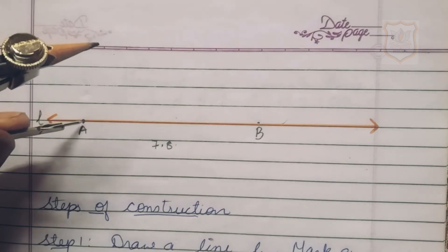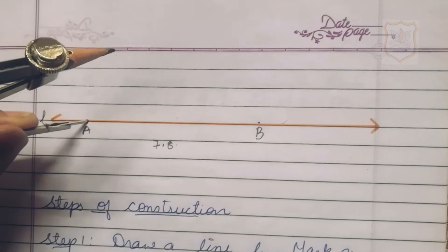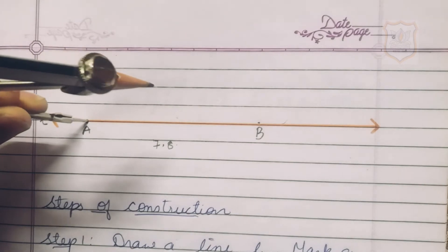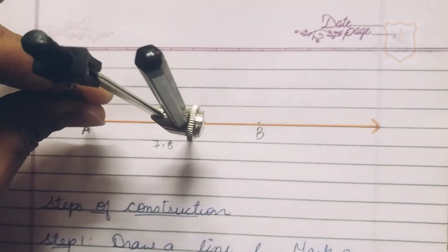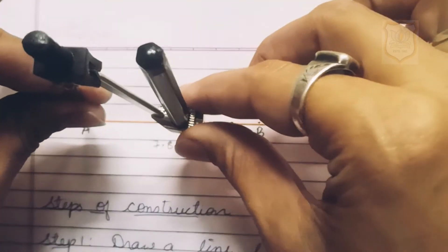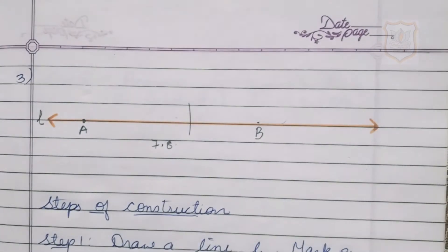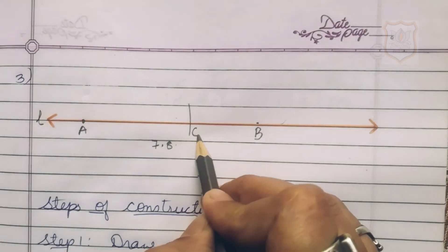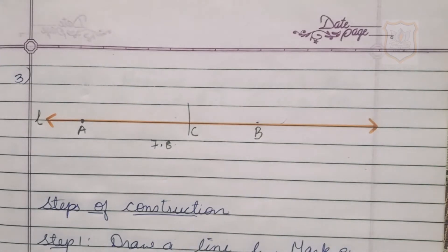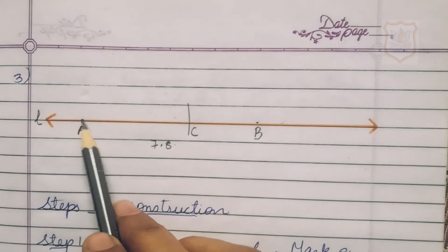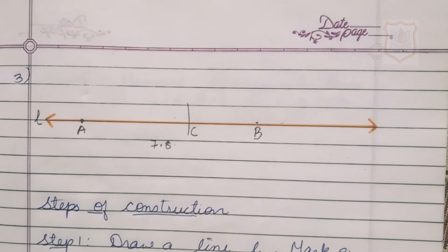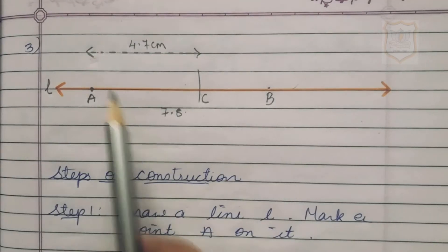Step 4: Keep the pointer of the compass on point A and draw an arc to cut the line L at point C. We draw the arc, cut line L, and name the point as C. Line segment AC has a length of 4.7 centimeter.